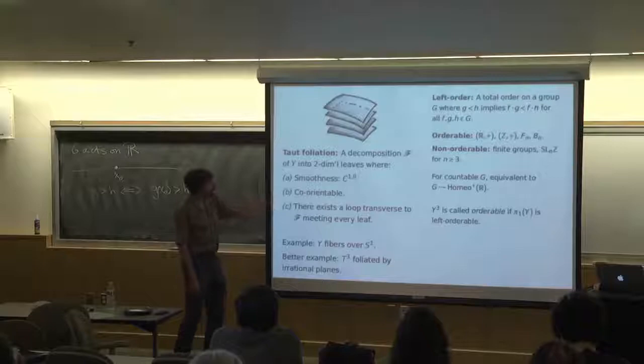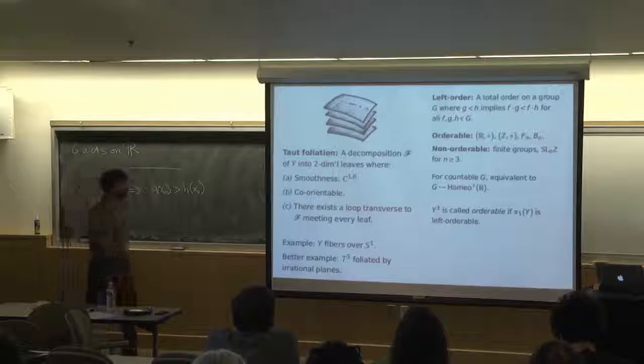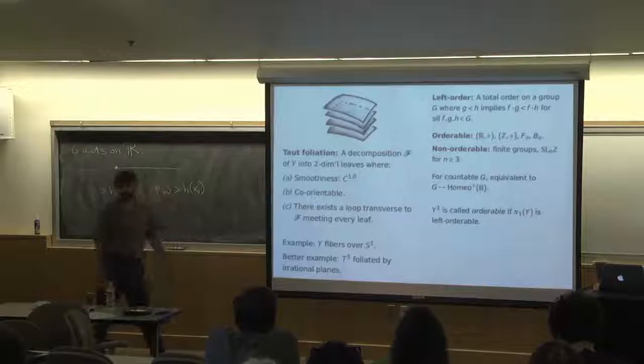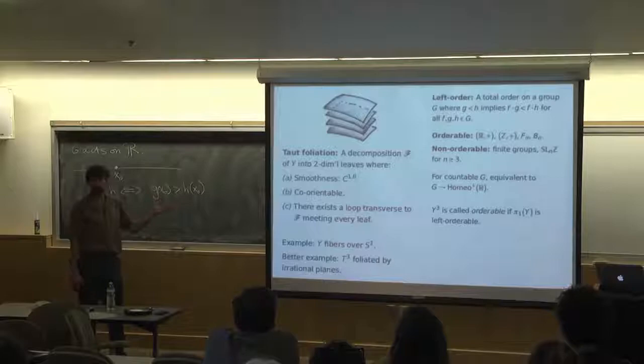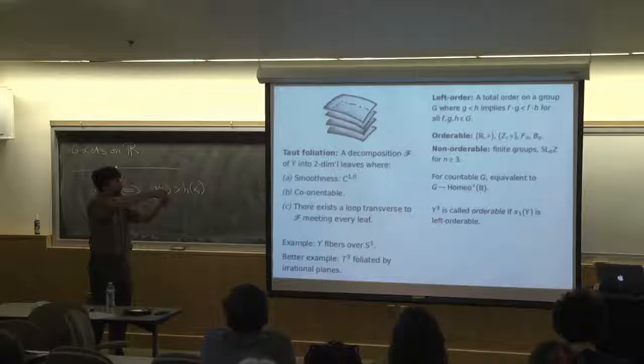The third notion is that of a taut foliation. We have this closed three-manifold. This is a foliation of the manifold into two-dimensional leaves. There's some assumption about smoothness — this is like the minimal level of smoothness you could possibly work with. We have this two-dimensional foliation, and I'm going to insist that it be co-orientable, so there's a preferred normal direction to each of the leaves. That's equivalent, since my manifold is orientable, to saying that the leaves are orientable. And then there's this additional condition: there's some loop which is transverse to the foliation and which meets every leaf.